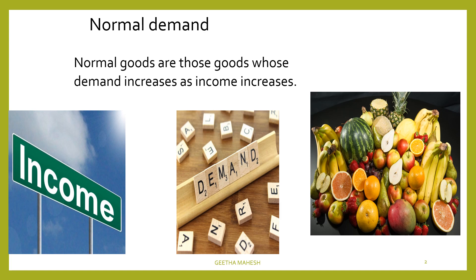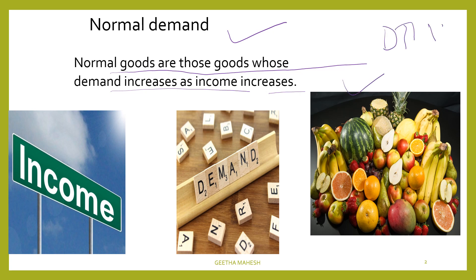Dear students, now let's learn about normal goods and inferior goods differences. Normal goods are those goods whose demand increases as income increases. If demand increases, then the consumer's income increases, and then the demand increases. So the good is normal goods.